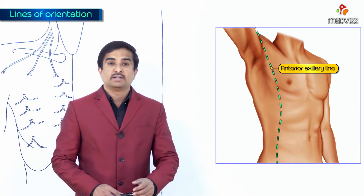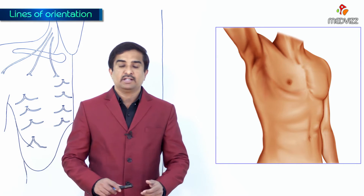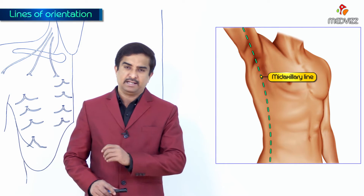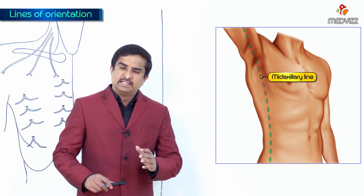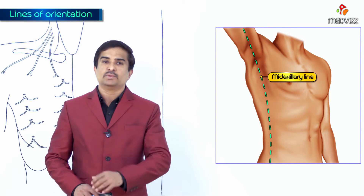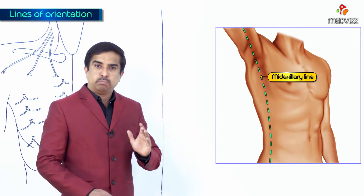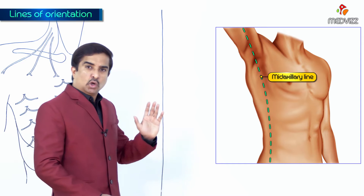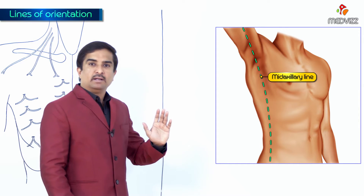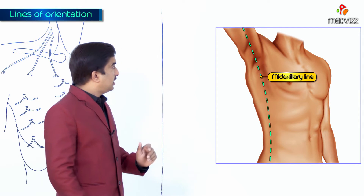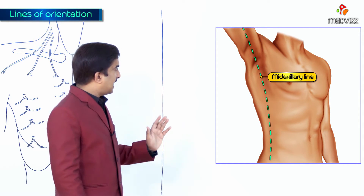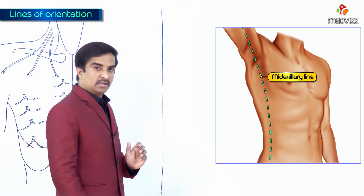The next one is called the mid-axillary line. This mid-axillary line runs vertically downwards from the point located midway between the anterior as well as the posterior axillary folds.